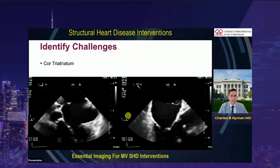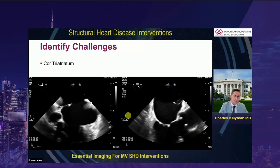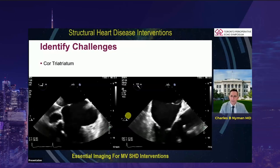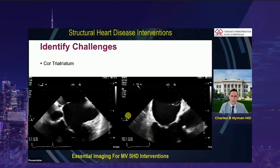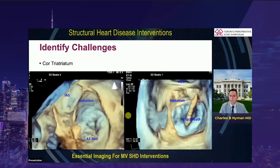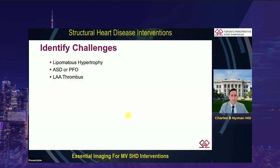The next step is to rule out challenges. Here's a patient that came for a clip — not quite a cor triatriatum, but the patient has an atrial septation. Knowing this in advance allowed us to plan our targeted transseptal puncture accordingly. Other challenges to identify include lipomatous hypertrophy, an ASD or PFO, which will create challenges with your targeted transseptal puncture. And obviously if one sees left atrial thrombus, you're going to hit the brakes and bring your patient back another time.